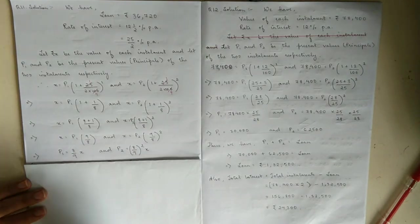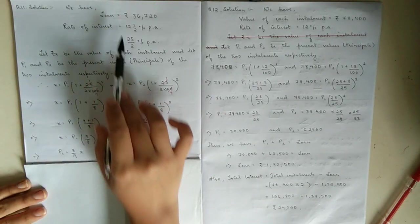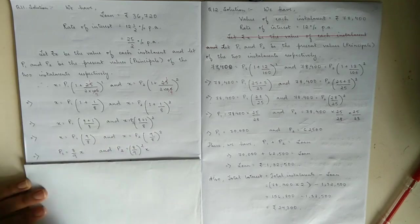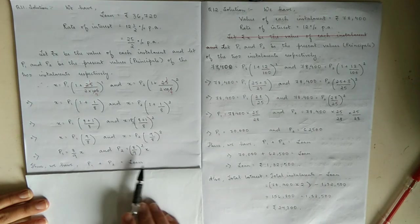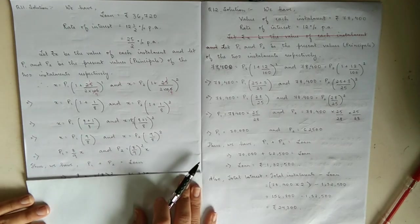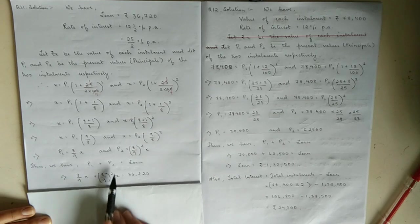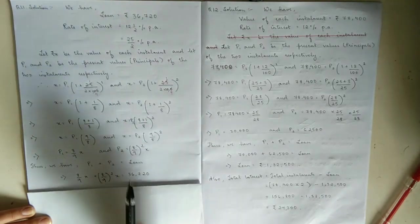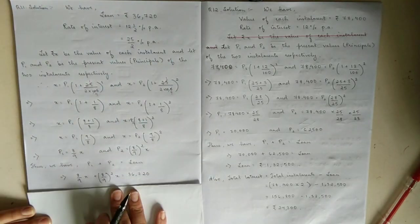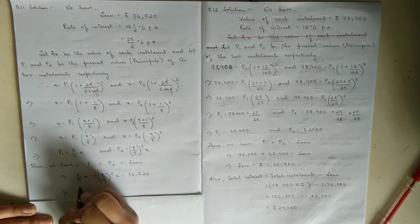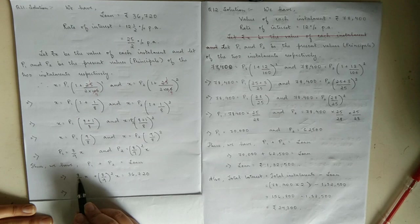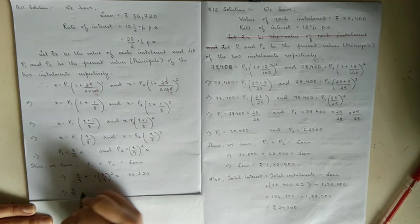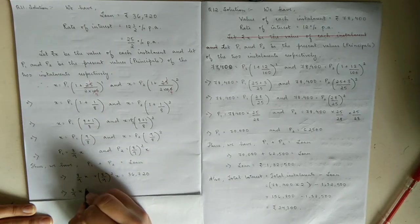We've already mentioned that loan equals the sum of all present values, which is p1 and p2. So p1 plus p2 equals loan. We'll substitute the values: 8 by 9 x plus 8 by 9 squared x equals 36,720. We can take out the common terms, so it becomes 8 by 9 x times open bracket 1 plus 8 by 9 close bracket equals 36,720.